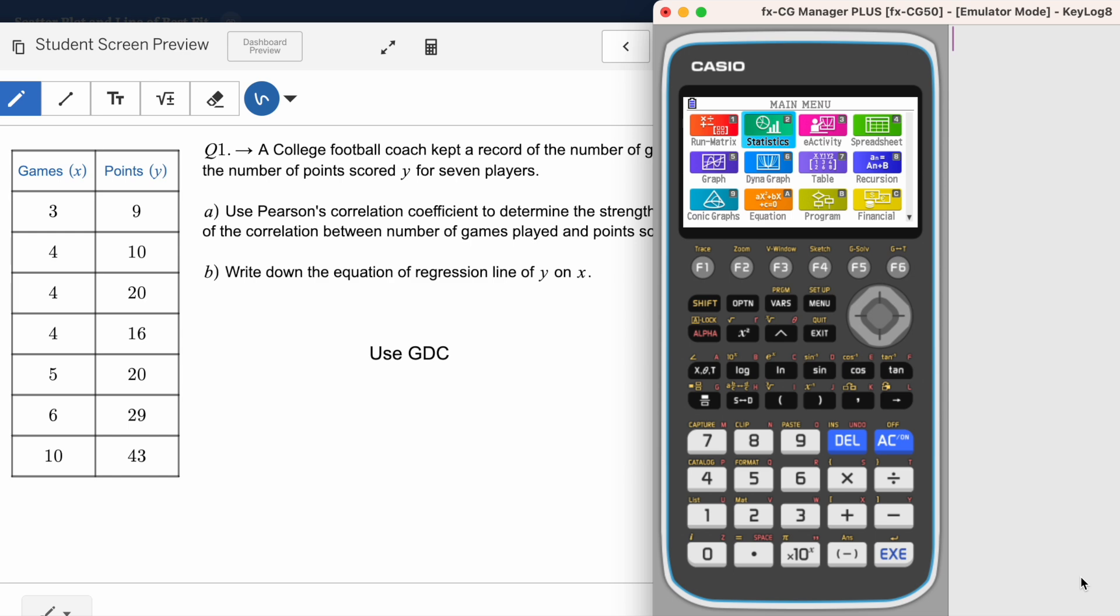Hi everyone. Today in this video, I'm going to show you how to use Casio FX-CG50 for regression lines. There are two types of regression lines, y on x and x on y. We'll explore both one by one.